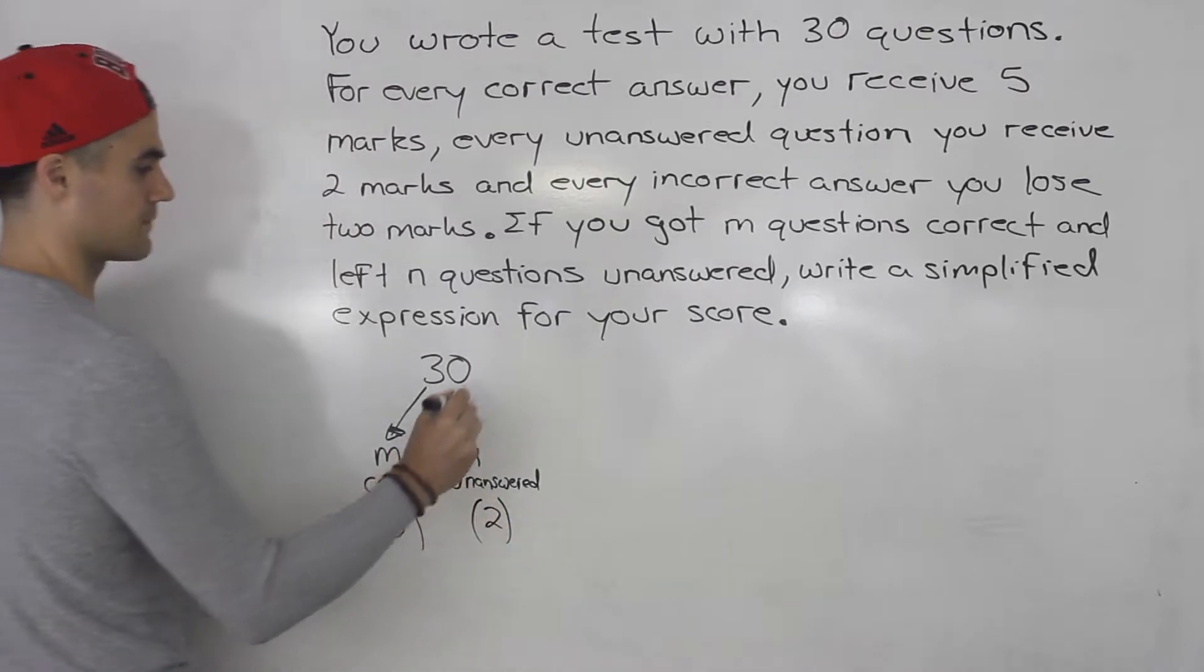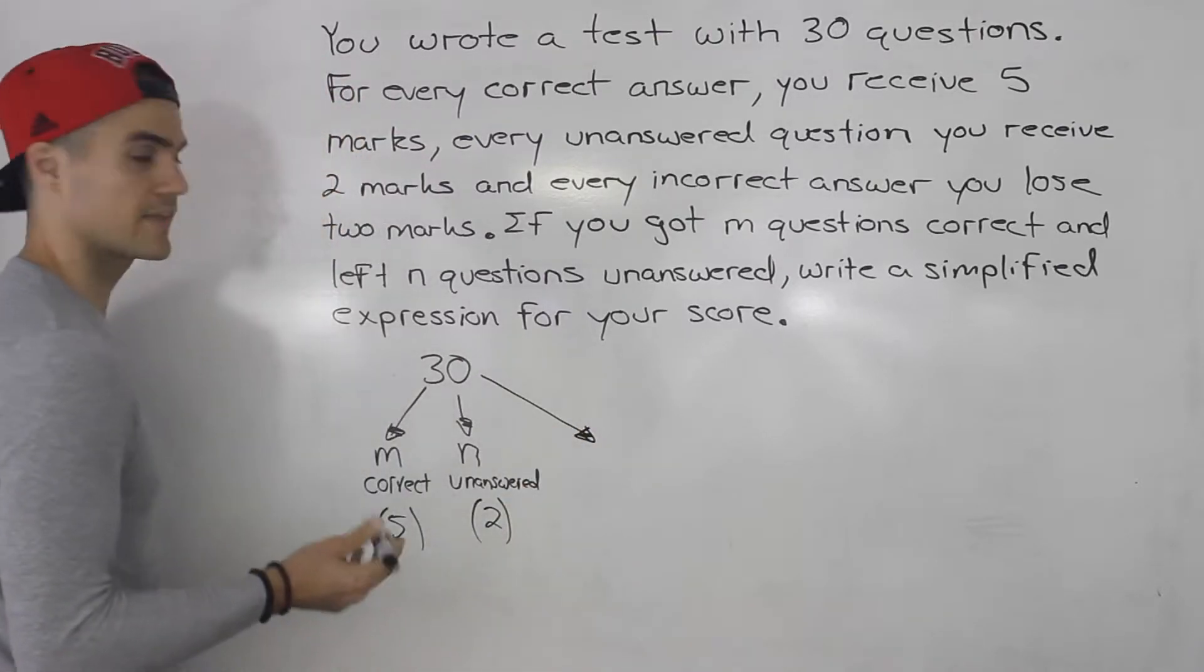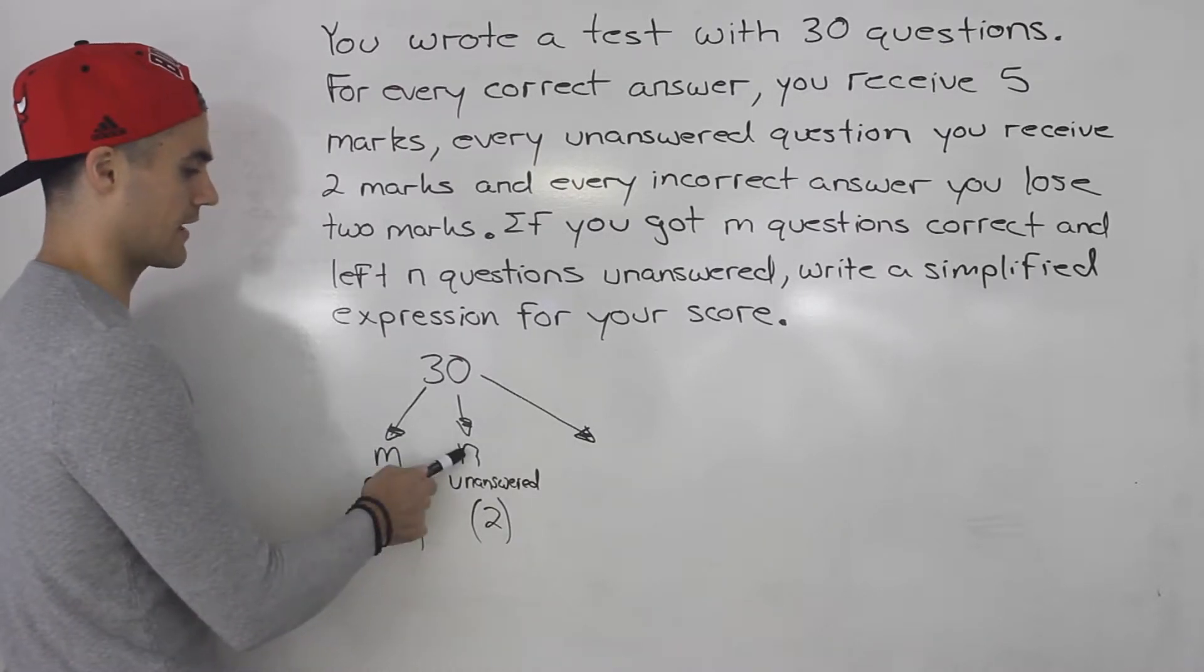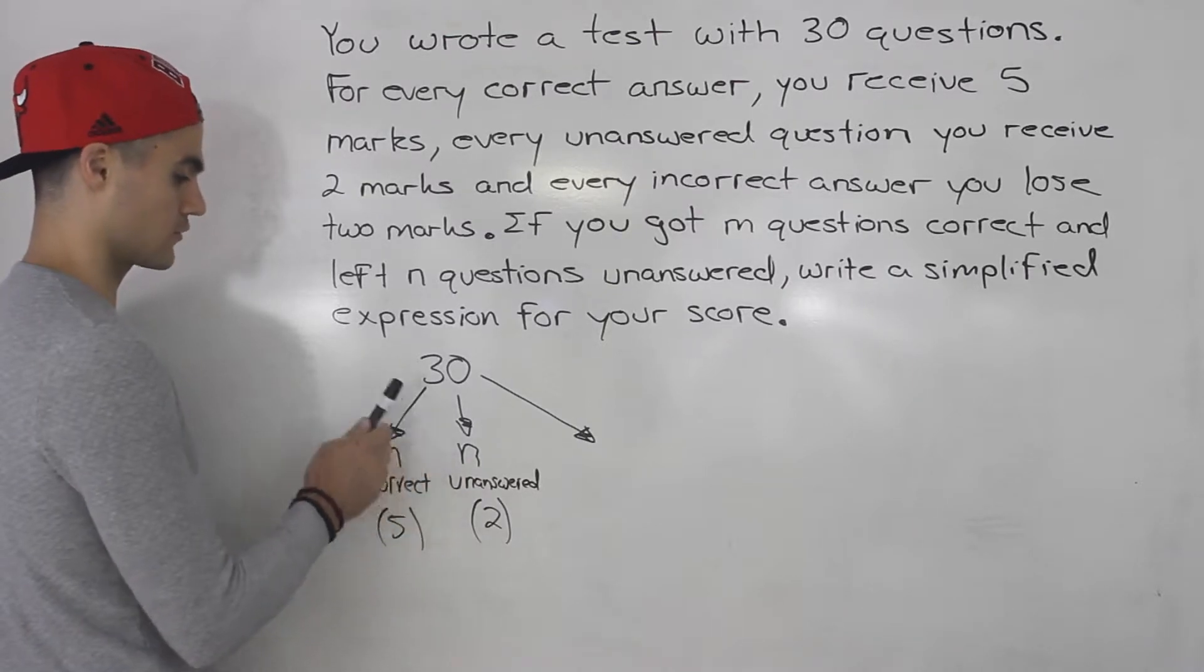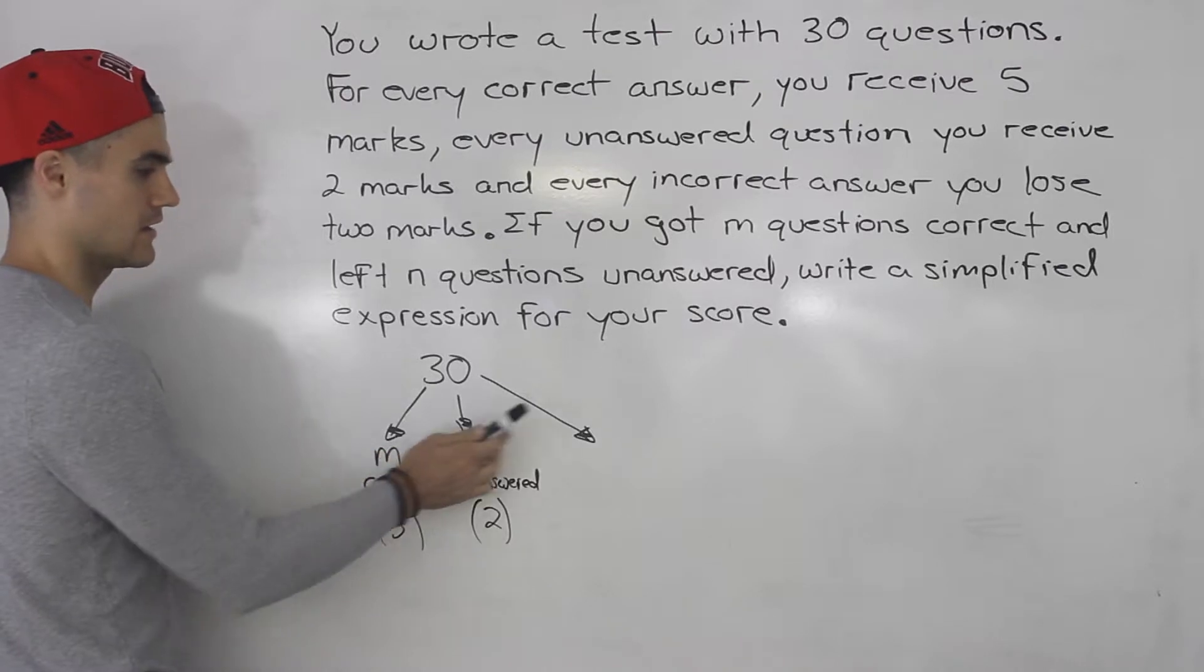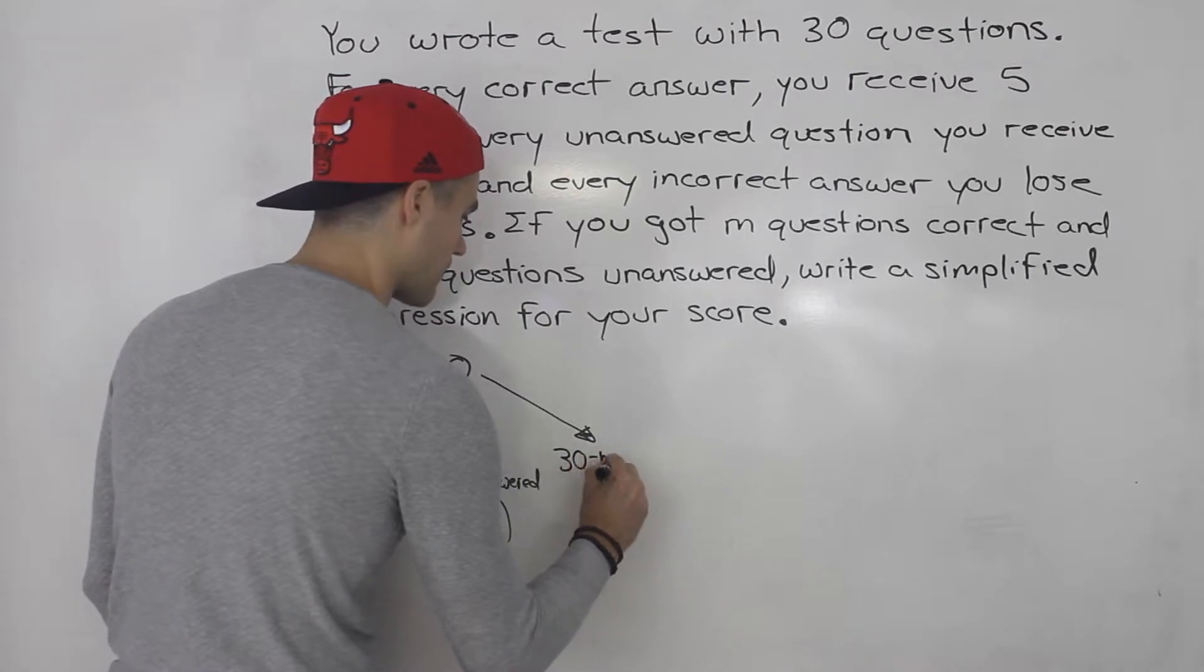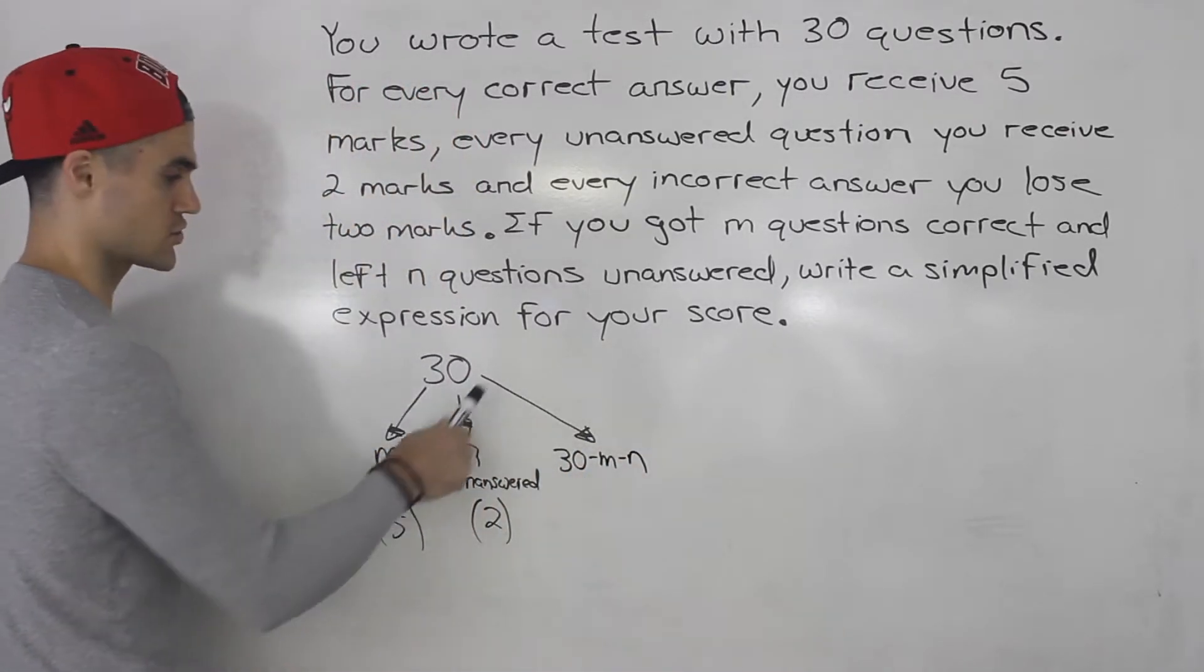Now what's left here? Well there's a number of questions that you got incorrect, but they didn't tell us how many incorrect questions you got. They only told us the amount of correct questions you got and unanswered questions you got. But if we know that the number of correct questions is M and the unanswered questions is N, then we know that the number of incorrect questions is going to be 30 minus M minus N. The remainder of the 30 questions.